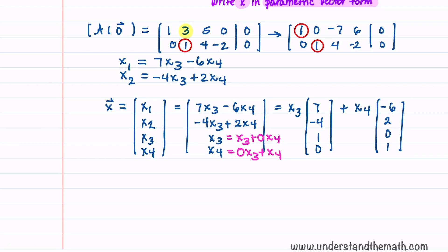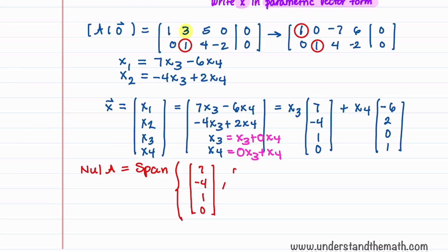The null space of matrix A is the set of all solutions x and can be written as Nul(A) = span{[7, -4, 1, 0], [-6, 2, 0, 1]}, since the span is the same as a linear combination of our two vectors. It's also common to discuss the geometric description. The span has two vectors, so the geometric description is a plane. Each vector has four components, so our null space is a plane in R^4.